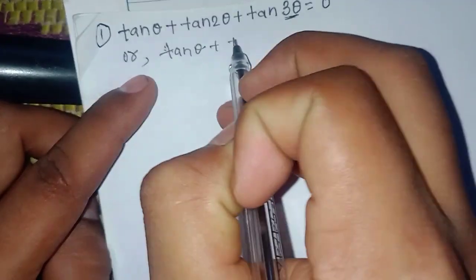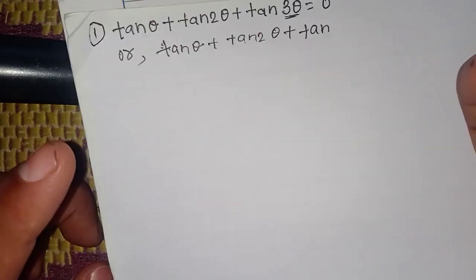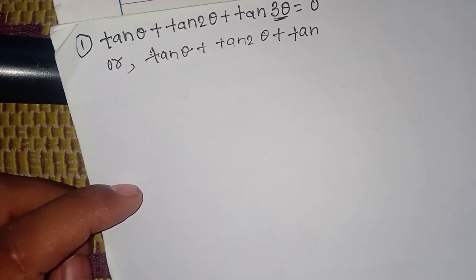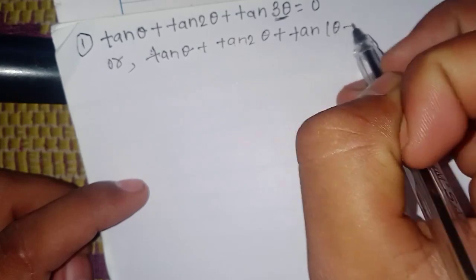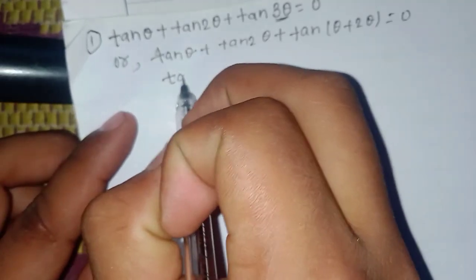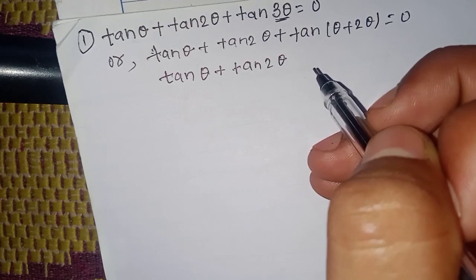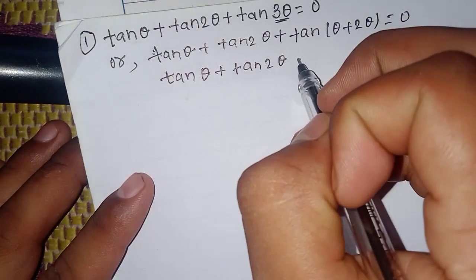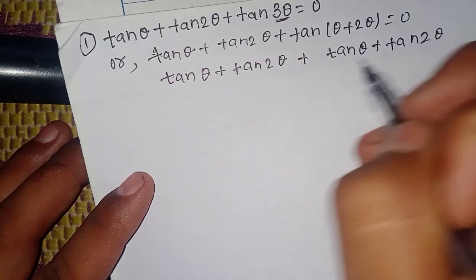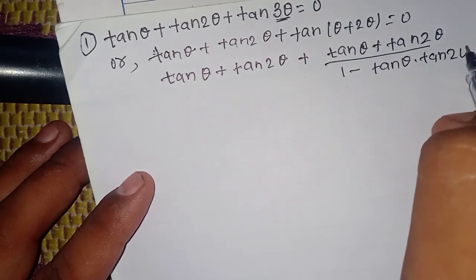We have 10 theta plus 10 two-theta. Using the formula, for tan(C + D) we get tan(A) plus tan(B), which gives tan(A plus B) equal to tan(A) + tan(B) divided by 1 minus tan(A) into tan(B), equal to zero.